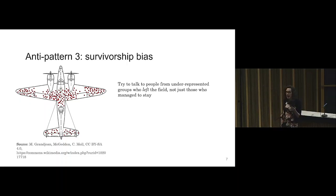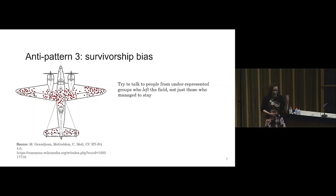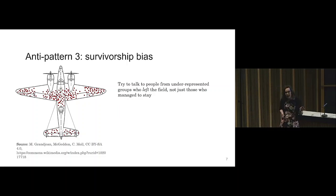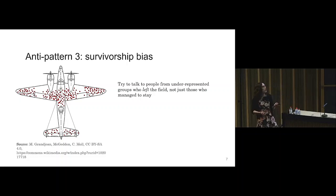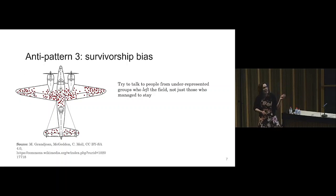The same principle applies here. If you're talking to people from underrepresented minorities — women, people of color, people with disabilities — and you only talk to people currently employed in your organization, especially at senior levels, you're getting an unrepresentative sample. By definition, they have managed to survive the environment and make it this far. If that's all you do, you're missing a lot of important information. A really underrated way of improving equity and diversity policies is to actually seek out people who have left the field — either because they were pushed out or because they decided they were done — and talk to them about why they left.